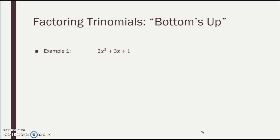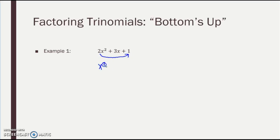The first one, call it Bottoms Up. This kind of goes along with FOIL — if you prefer FOIL, you might like this method best. Right now I can't factor like we've been doing because of this 2. So I'm going to temporarily move it — multiply it to become part of my C. Then I'm just going to rewrite it as X squared plus 3X plus 2. Now I've got a coefficient of 1, A equals 1, so I can factor like we've been factoring.